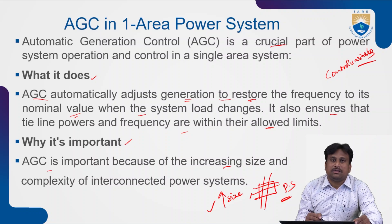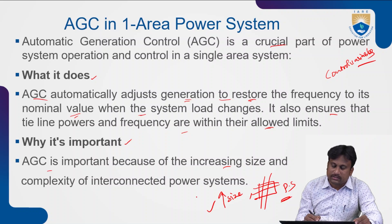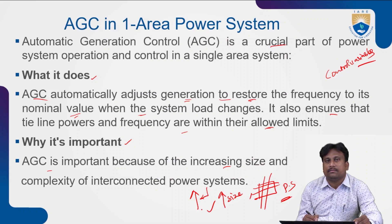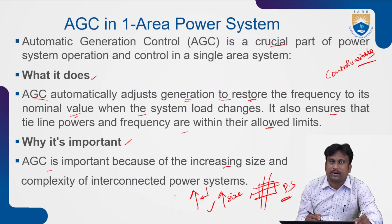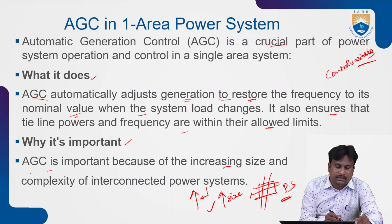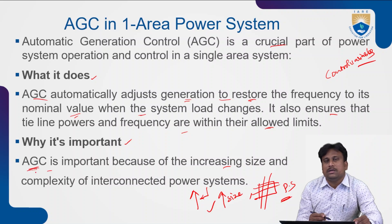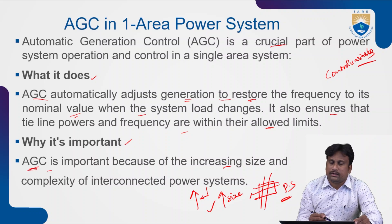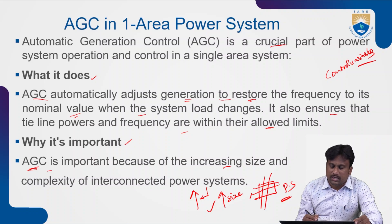The power system network is tightly interconnected with many components. When the size increases, there may be distortions due to false interruptions, manual operations, or automatic shutdowns. To avoid such problems, we need to compensate with automatic generation control action, which can handle whatever system failures or disorders occur. Because of this, AGC plays a key role in the power system network.